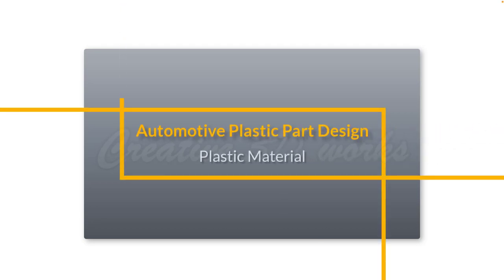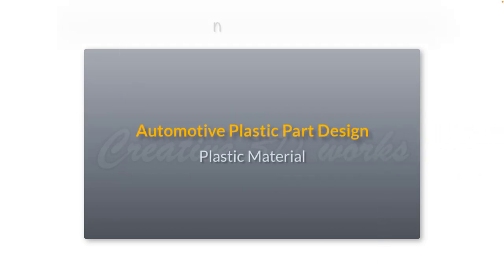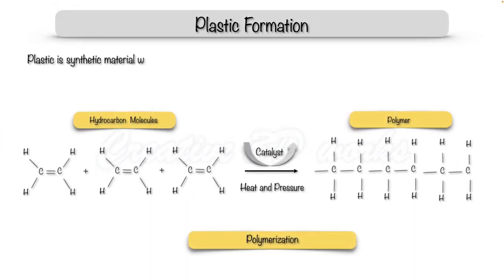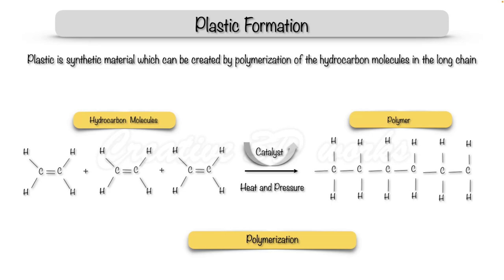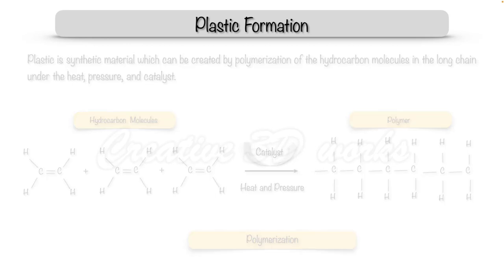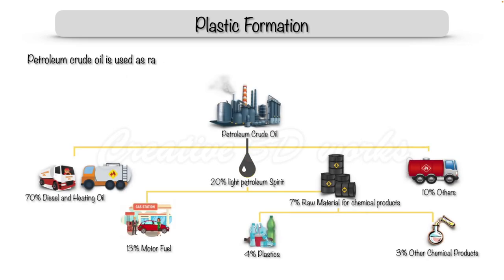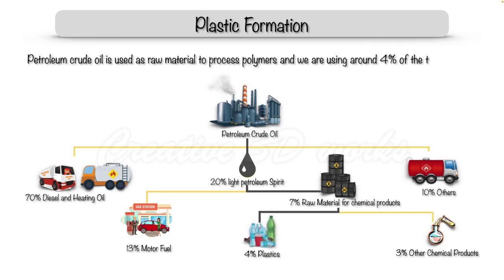Hello everyone, today we are going to learn about plastic materials. Plastic is a synthetic material which can be created by the polymerization of hydrocarbon molecules in long chains under heat, pressure, and a catalyst. Petroleum crude oil is used as a raw material to process the polymers, and we use around four percent of total crude oil to process the polymers.